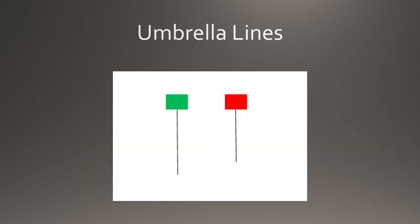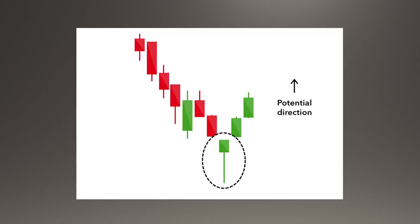Before we begin with the hammer candles, let's quickly understand what umbrella lines are. These are candles with long lower shadows and small real bodies. They're called umbrella lines because of their shape — they look like umbrellas. These lines can either be bullish or bearish according to the market environment. If an umbrella line emerges during a downtrend, it is a signal that the downtrend should end. In such a scenario, this umbrella is labeled as a hammer.